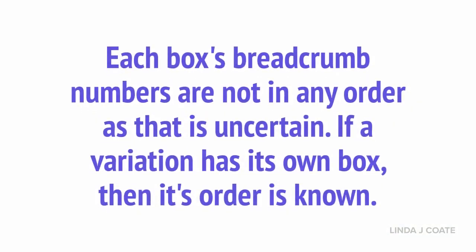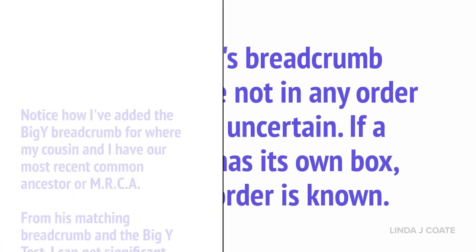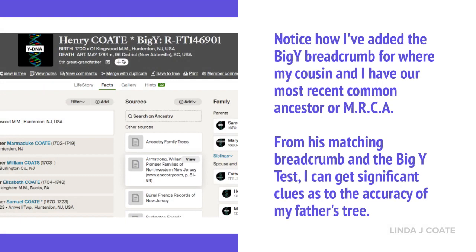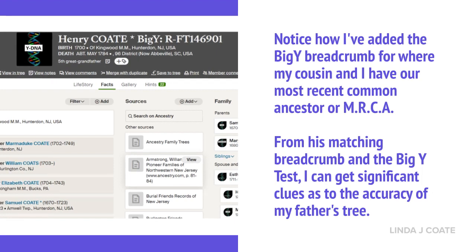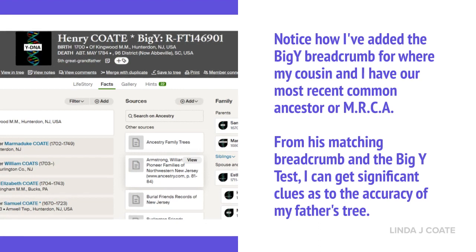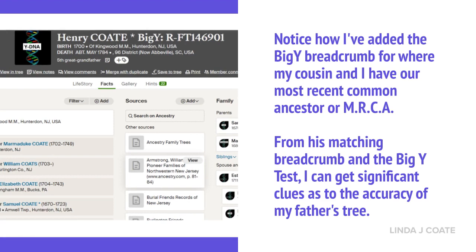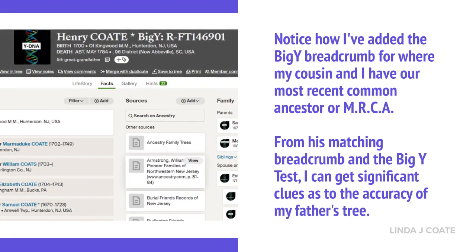Each box's breadcrumb numbers are not in any order, as that is uncertain. If a variation has its own box, then its order is known. Notice how I've added the Big Y breadcrumb for Henry Cote to my family tree — that might change over time, but it's important because as I get matches, I can make sure that I've traced the line correctly, or reconfigure it when a breadcrumb tells me something different.